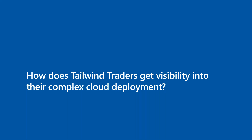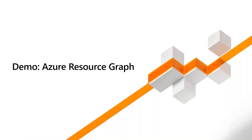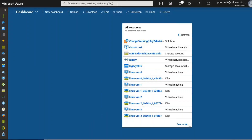The first thing I want to show for governance is how to get visibility into your cloud environment. If you have subscriptions all over the place in your company — different departments, different subscriptions — you don't have control over what everyone is deploying. You want to build an overview. For that, I'll introduce you to Azure Resource Graph. Azure Resource Graph really allows you to get an overview of the entire Azure environment.